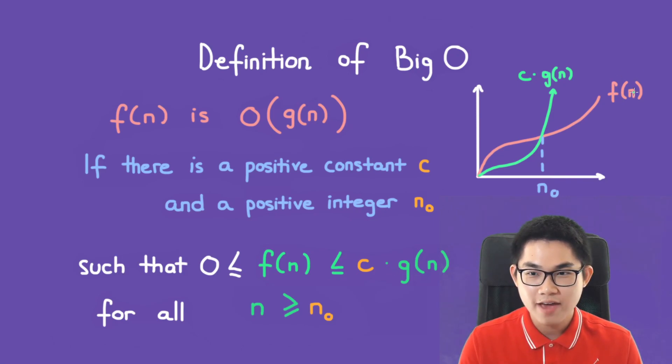As you can see here, f(n) is always smaller than c times g(n) starting from n₀ and onwards. And the reason why here there is a greater than 0 is because we want both of these functions to be above the horizontal axis.